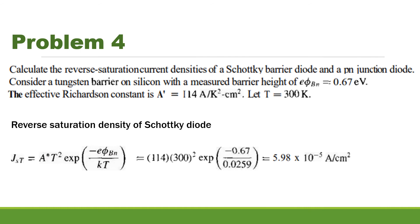Let us now do one problem. Our first problem is to calculate the reverse saturation current densities of a Schottky barrier diode and a P-N junction diode. Here, a tungsten barrier on silicon with a measured barrier height of φBn approximately equal to 0.67 eV is given, along with the Richardson constant and temperature values.